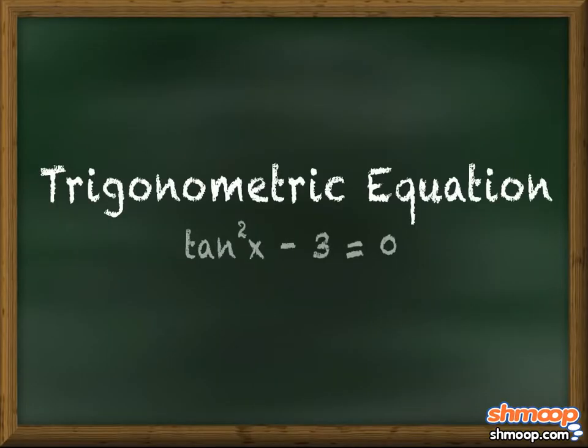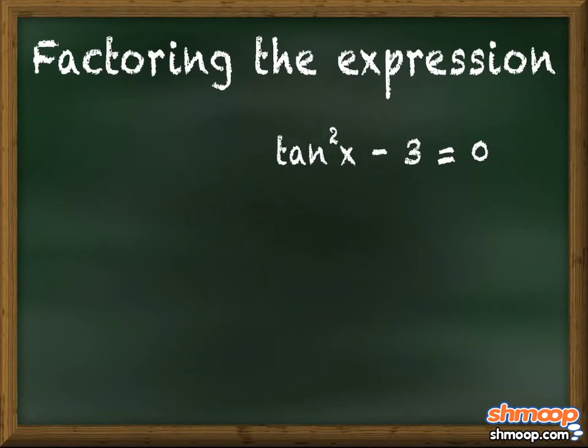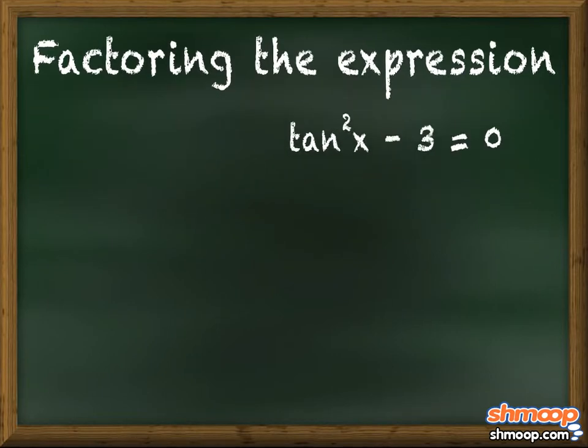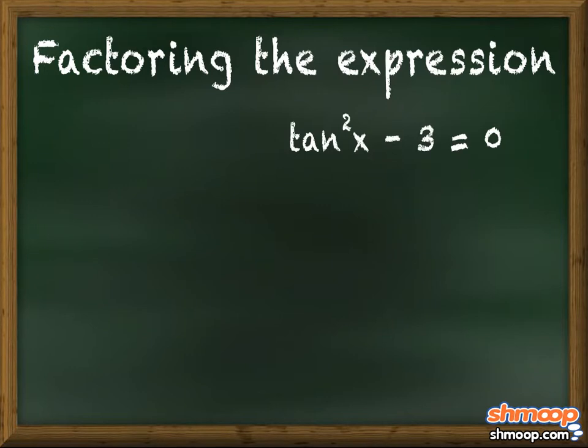He grabs the marker and begins solving the equation by factoring the expression. If we factor the expression tan²x - 3 like the difference of two squares, we'll have the expression the quantity (tan x - √3) times the quantity (tan x + √3).